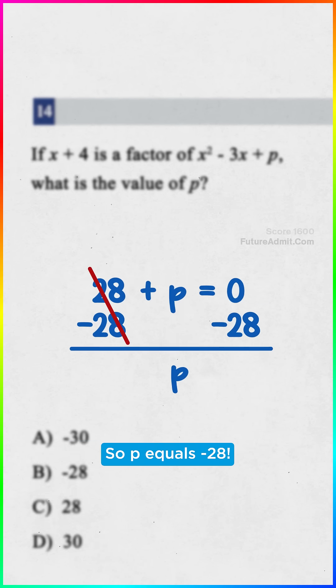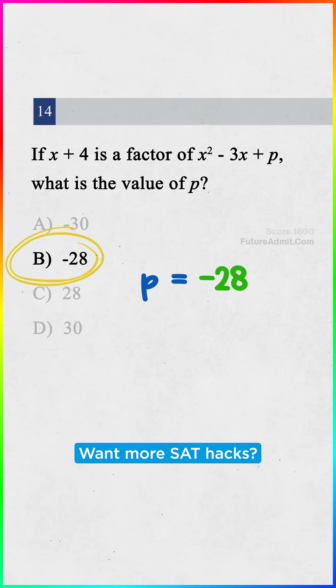Now just subtract the 28, so p equals negative 28. It's b. Want more SAT hacks? Click the video below.